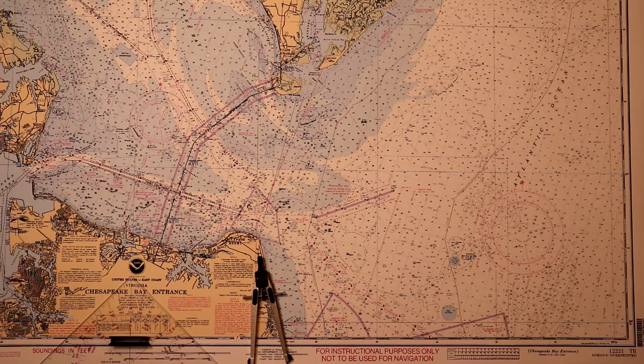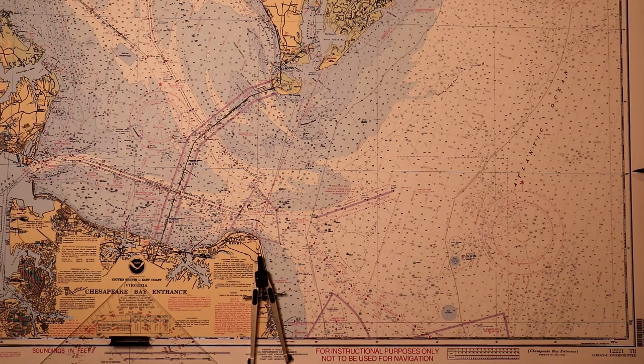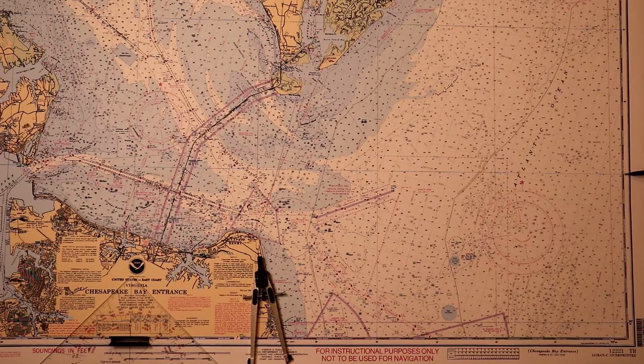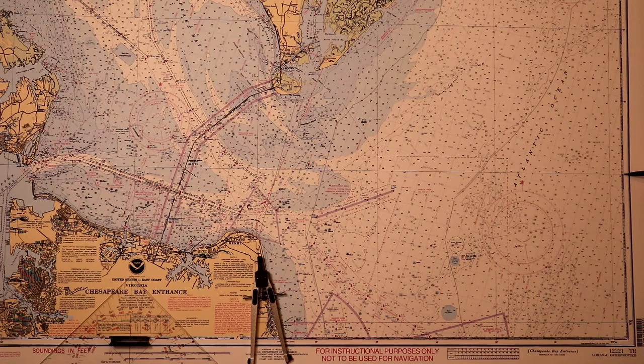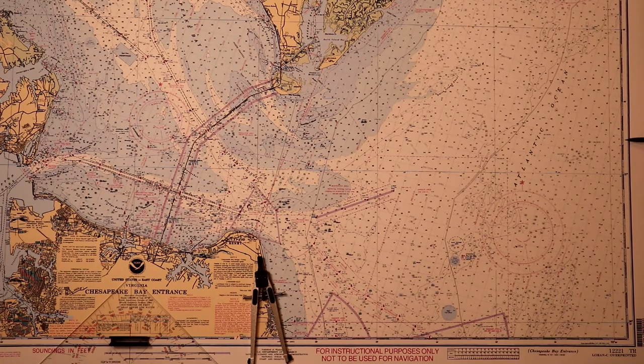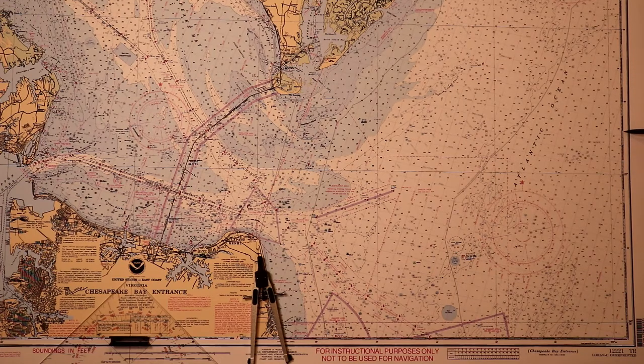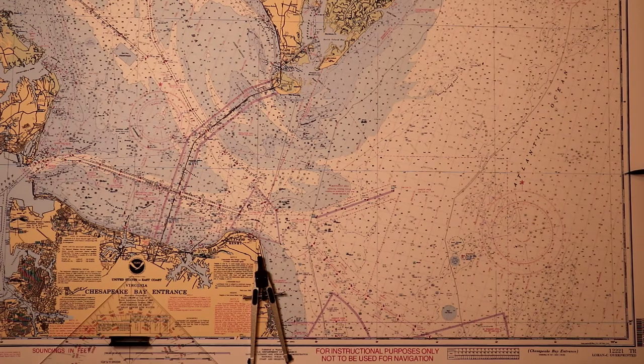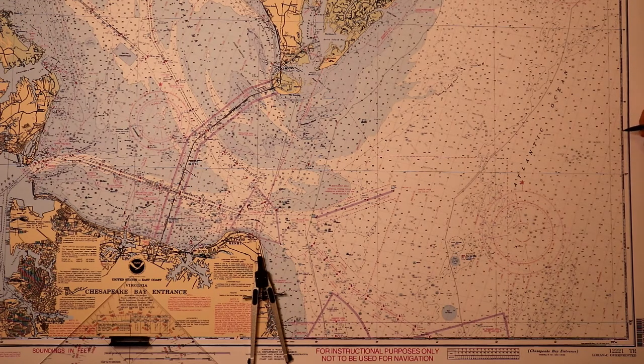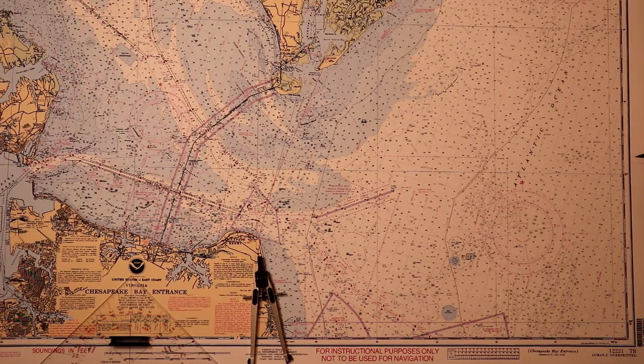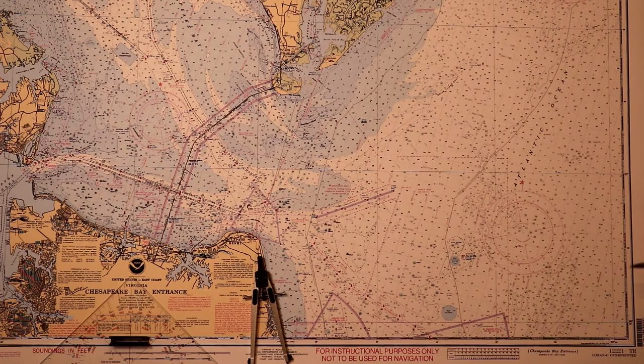So we're on the chart. I'm using Chesapeake Bay entrance, which is 12221. I'm actually using the training chart. Let's just say our latitude is 37 degrees 02.7. Right here is 37 degrees. Each one of these is one nautical mile. So there's 37 degrees 01.0, 02.0, and 03.0. So if we're going 37 degrees 02.7, it would be right here. That would be our latitude, 37 degrees 02.7.